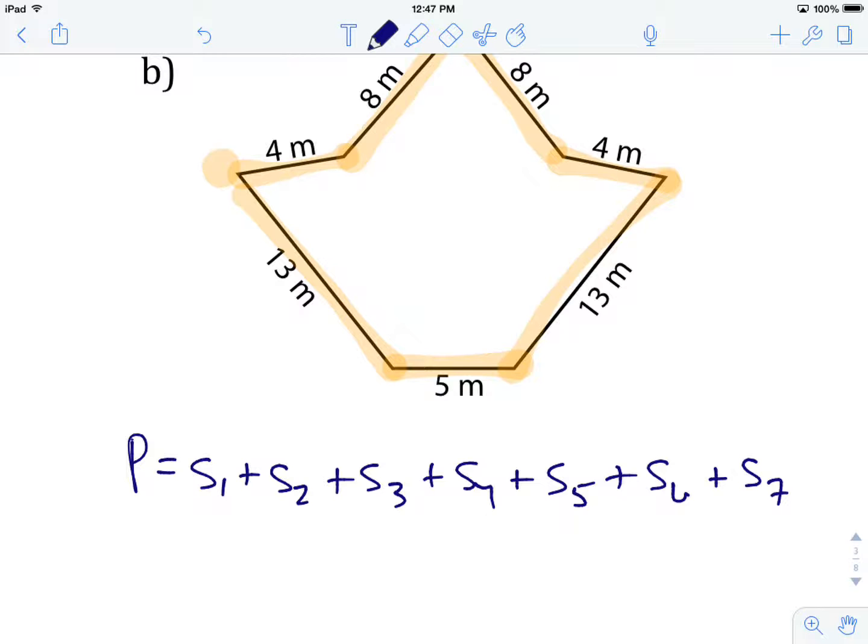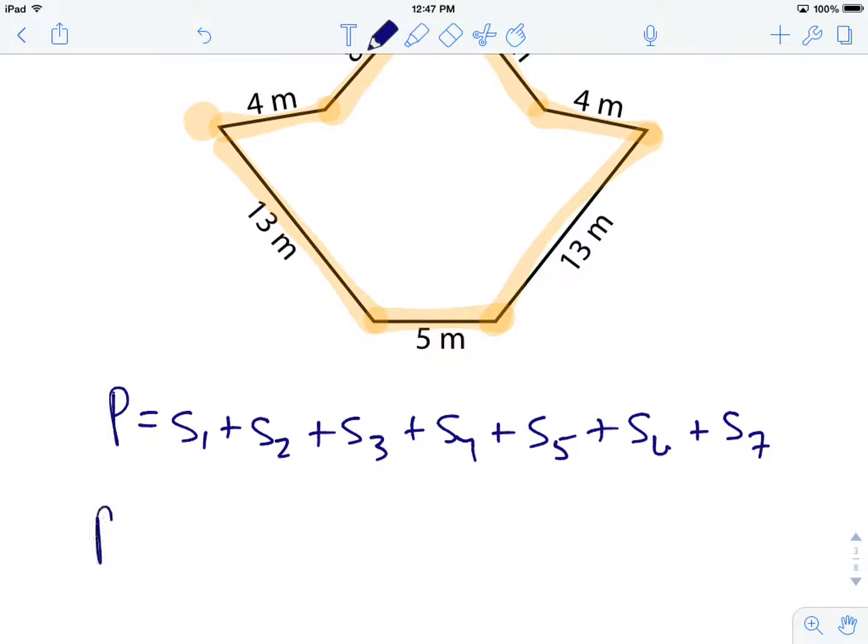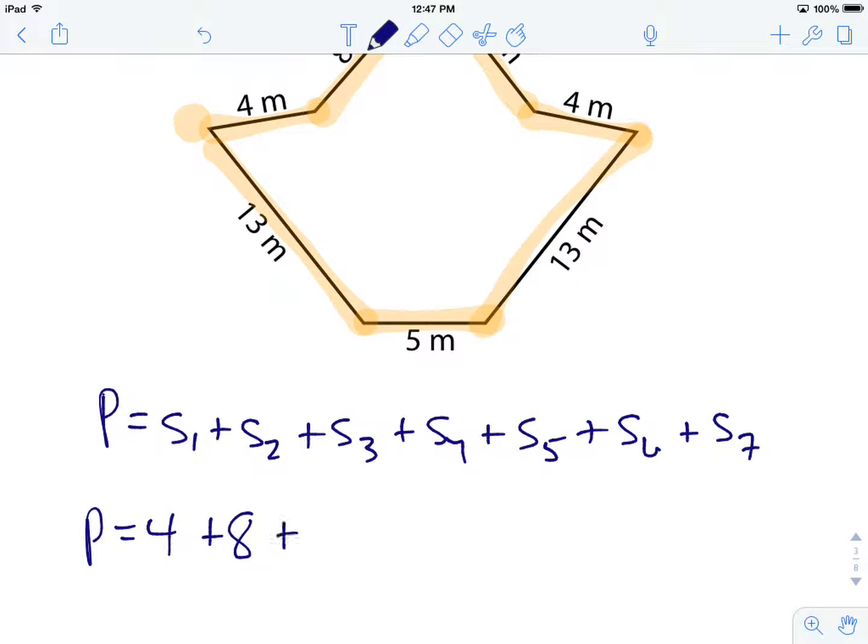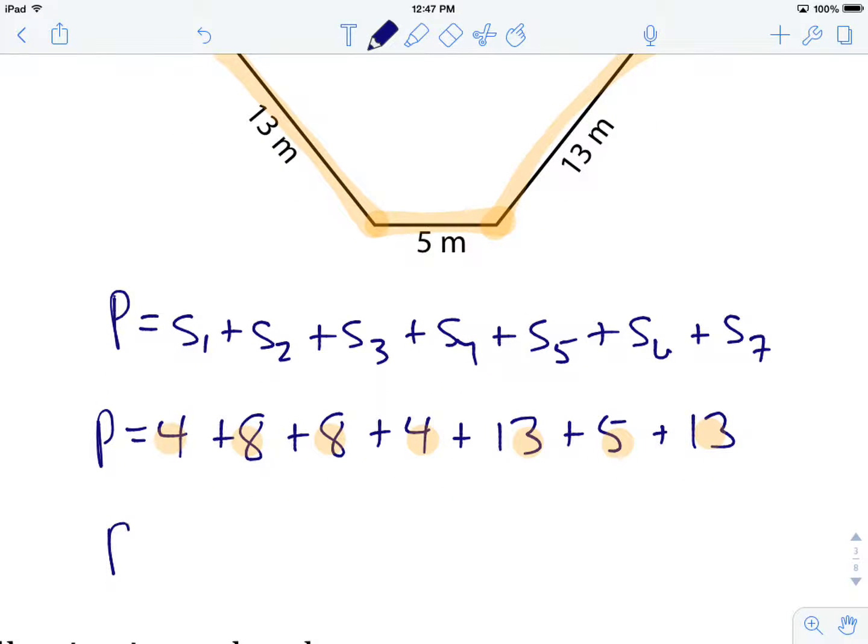The perimeter equals side one plus side two plus side three plus side four plus side five plus side six plus side seven. Now that's a little time-consuming to write out. What this is going to ensure is that I don't miss a side when I'm making my calculation. So the side I started with was four, then a side that was eight meters, another eight meters, four meters, 13 meters, five meters, and 13 meters. And that is, let me just double check here, one, two, three, four, five, six, seven different values. So that's as it should be.